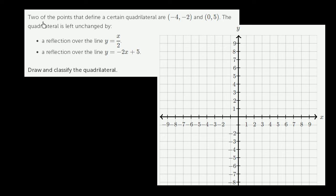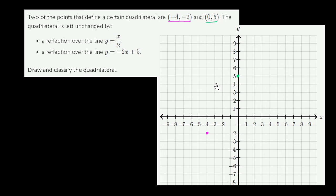Two of the points that define a certain quadrilateral are negative 4 comma negative 2. So let's plot that — negative 4 comma negative 2 — and 0 comma 5. So that's 0 comma 5 right over there.